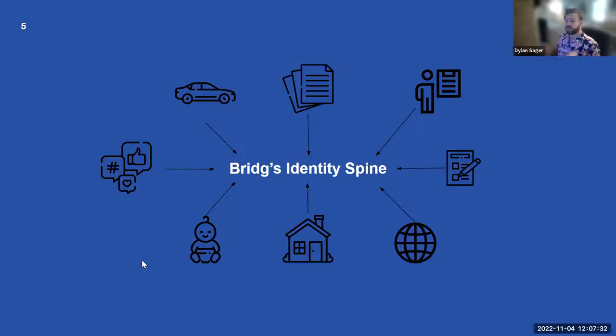Touching on that Bridge matching, we have what's called an identity spine. That's the idea of a collection of a consumer's data points used to identify someone. We gather that from publicly available sources, social media, our partners, a lot of different places to say what is a customer and what are they interested in. Do they have a car, do they own a home, maybe what interests do they have on socials.